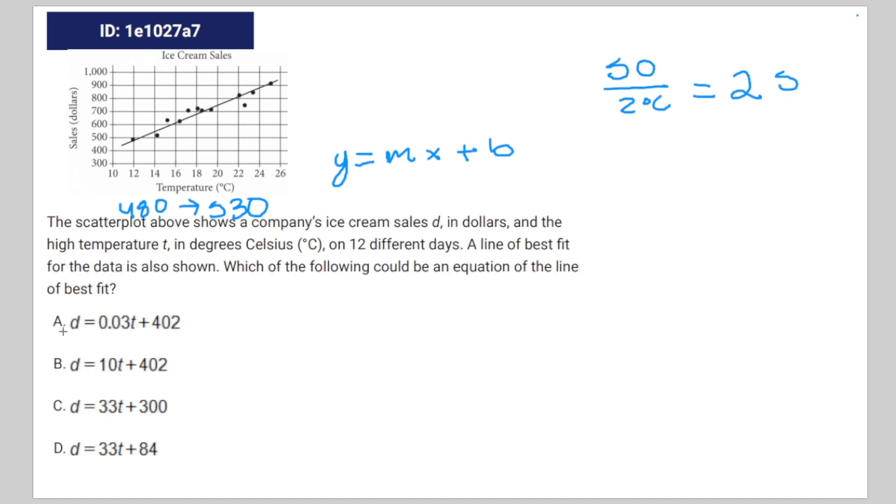The first two answer choices, A and B, aren't even close to that slope, so they can't be the right answers.